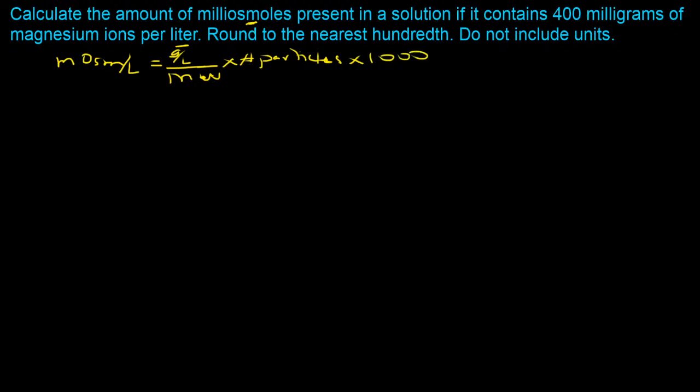We have an equation with three components: quantity in grams per liter, molecular weight, and number of particles. The first step is to determine the molecular weight. For magnesium, the molecular weight is 24 — you can get this from the periodic table, as the atomic mass of magnesium is 24. The other thing we need is the number of particles. Here we have a magnesium cation as the only species in solution, so the number of particles is 2.